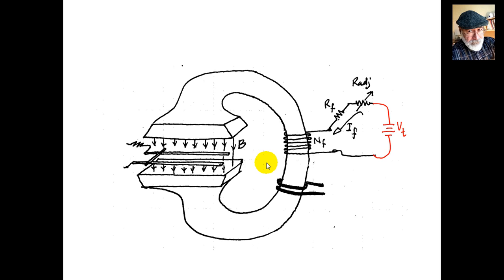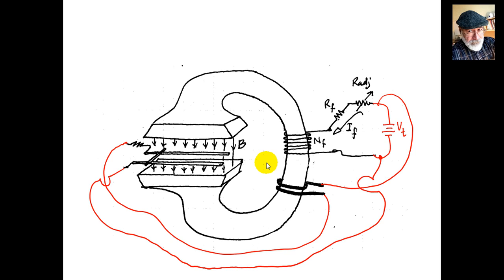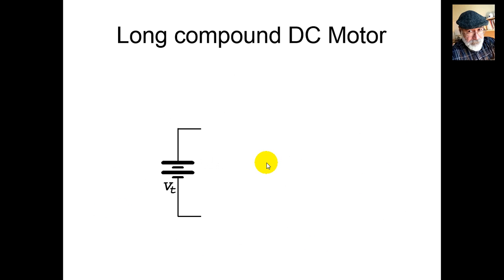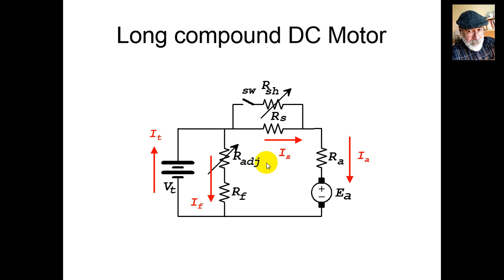Another possibility: we connect the battery to the field circuit, then connect the series coil directly from there, and the series coil goes in series with the armature, then back to the battery. This is neither shunt nor series nor independent — this is compound excitation, specifically long compound. The battery is in parallel with the field circuit, and the series coil is in series with the armature. The circuit identifies terminal current, field current, series coil current, and armature current, plus the controlling resistor RSH in parallel with the series coil.